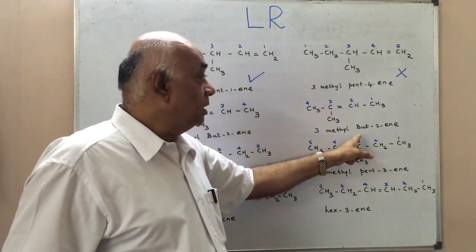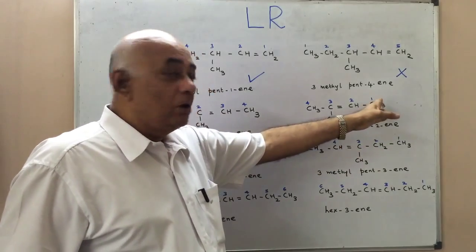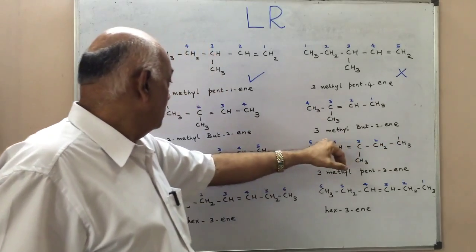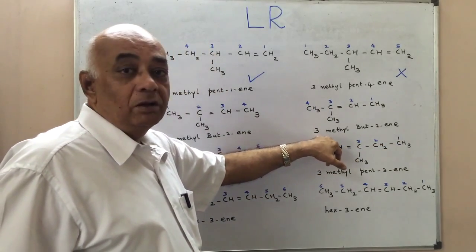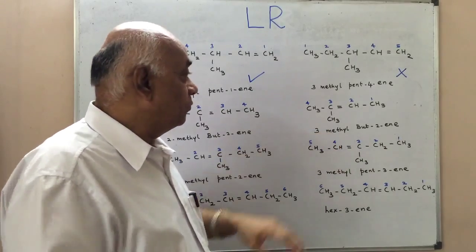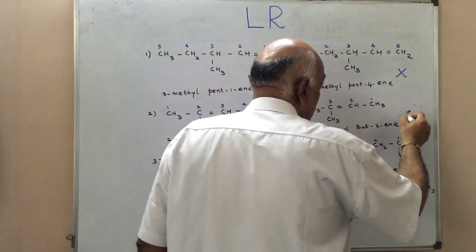If we look at the other way of naming it, numbering from right to left, then this would be but-2-ene and 3-methyl. The numbering again disobeys the lowest number rule, and therefore this structure would be incorrect.